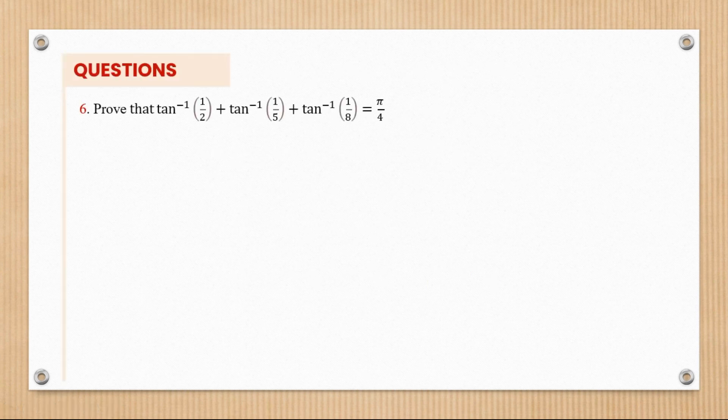Question number six: prove that tan inverse of one half plus tan inverse of one over five plus tan inverse of one over eight is pi over four. In this case we have three different parts adding themselves, and this is actually an easy one.